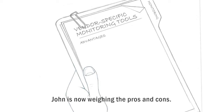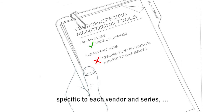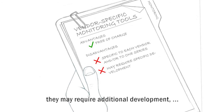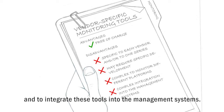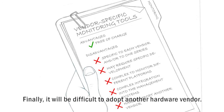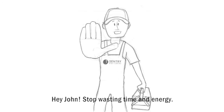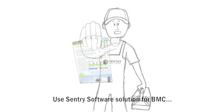Acquiring another hardware vendor will also require additional and complex tasks. John is now weighing the pros and cons. Vendor-specific monitoring tools are free of charge, but specific to each vendor and series. They may require additional development, it will be complex to monitor different platforms, and to integrate these tools into management systems.